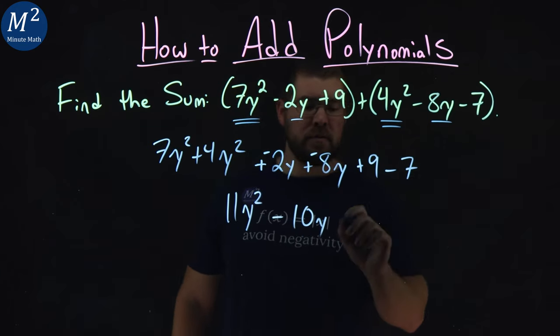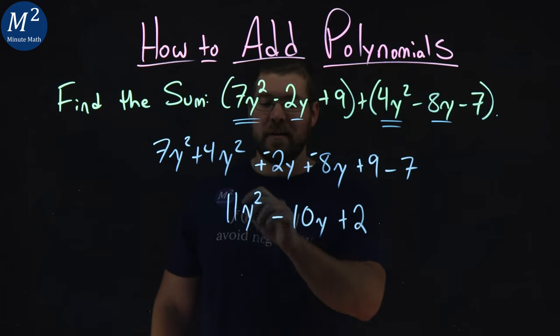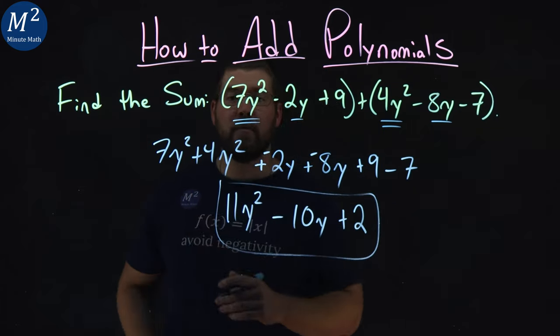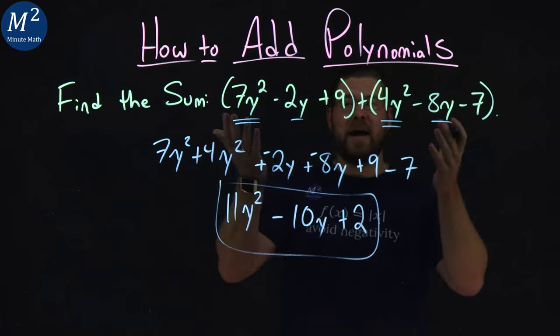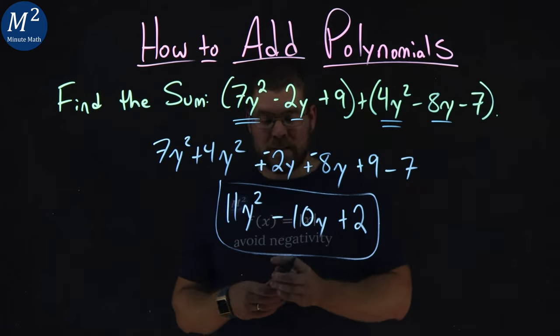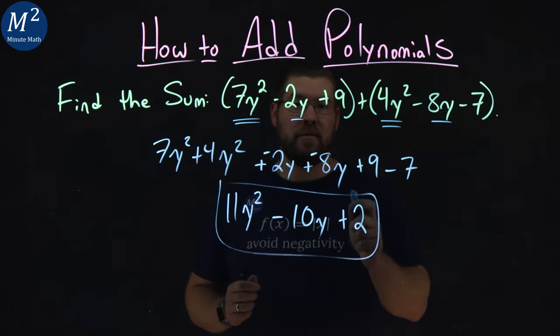Lastly, 9 minus 7 is 2, so we add 2. There we have it. We simplified our polynomial, we added them together, and we got 11y² - 10y + 2.